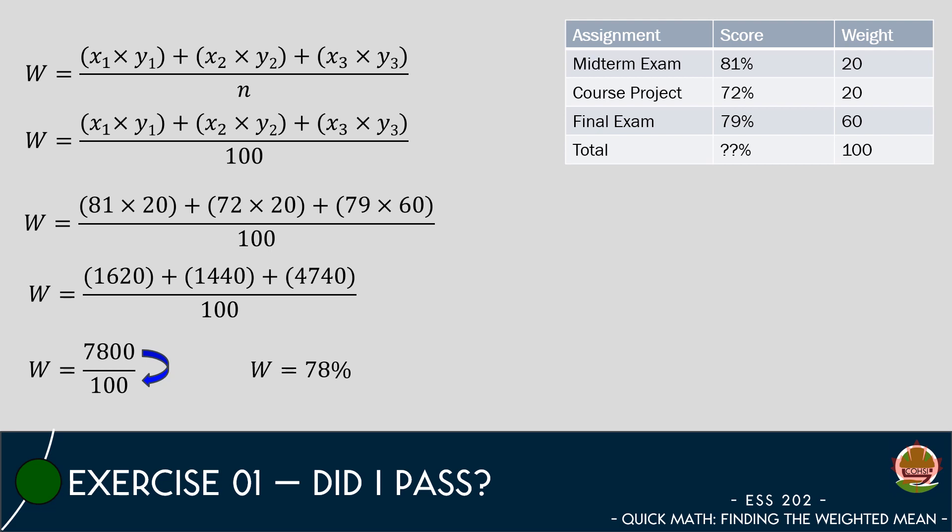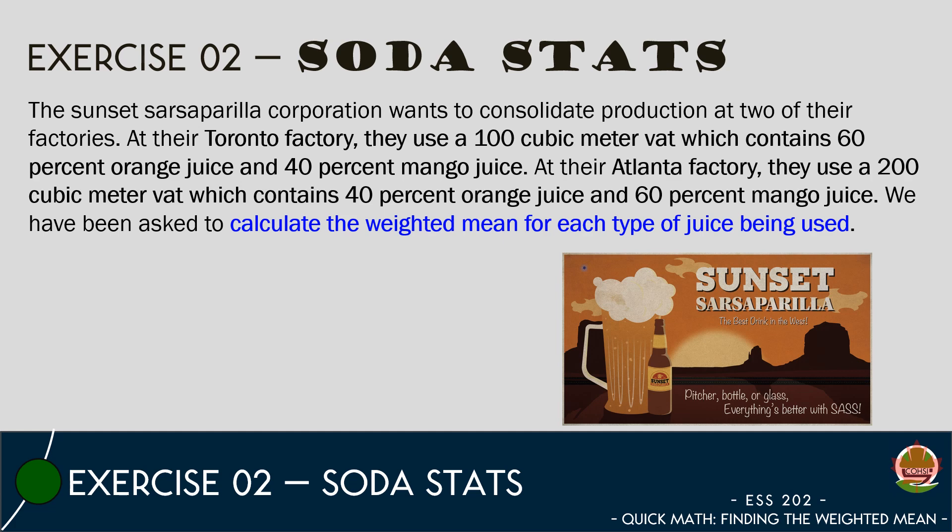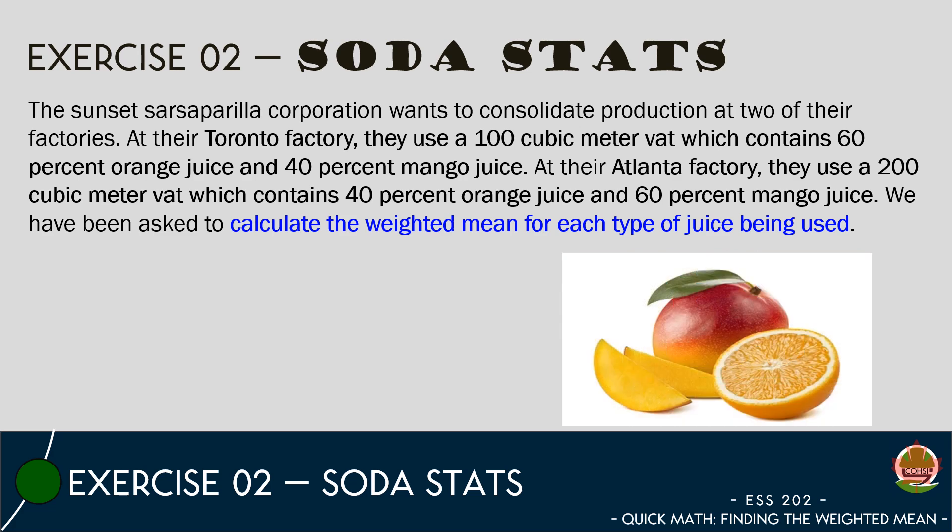We know that we use 100 when calculating weighted means for academic grades, but what do we do when we are calculating the weighted mean for other samples? Let's find out in the next exercise. Our second practice exercise is called Soda Stats. The Sunset Sarsaparilla Corporation wants to consolidate production at two of their factories that produce soda. Their soda requires a blend of orange juice and mango juice.